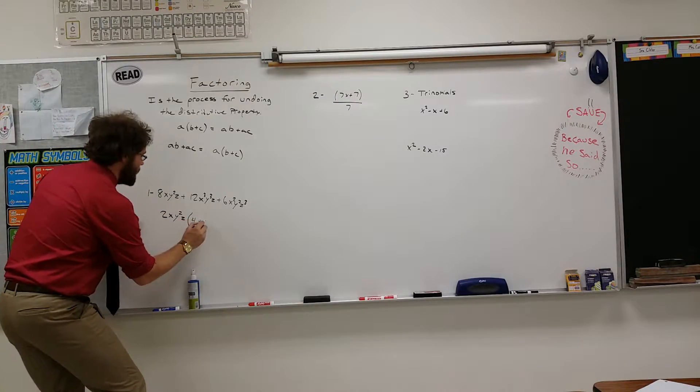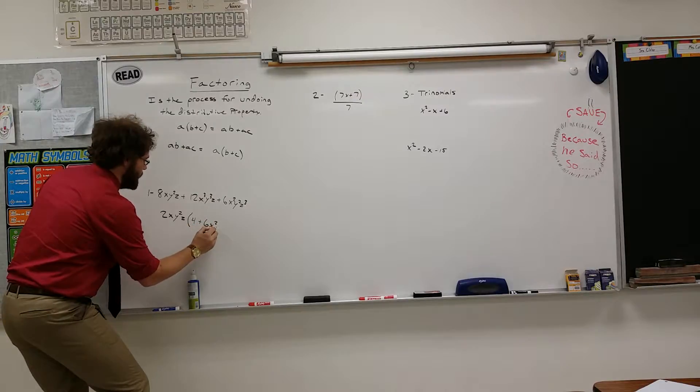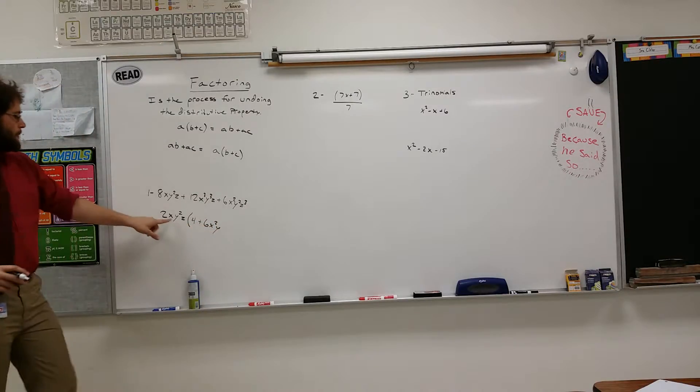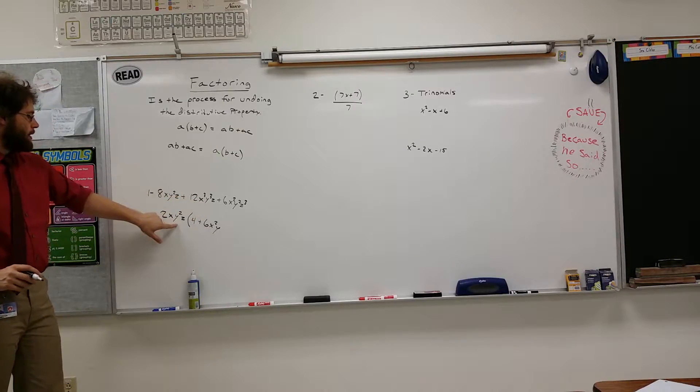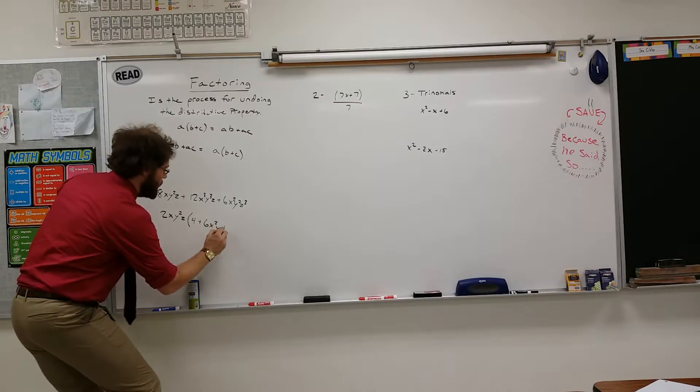In the next part, you're going to get 6X squared Y, because when you divide X to the third by X, you get X squared. You divide Y to the third by Y squared, you get Y.